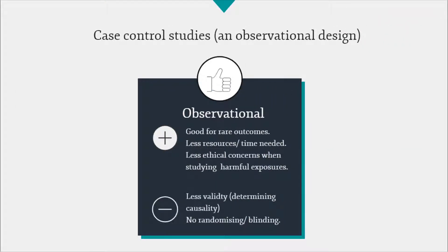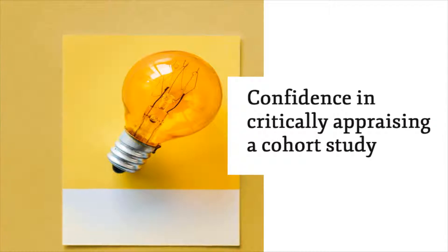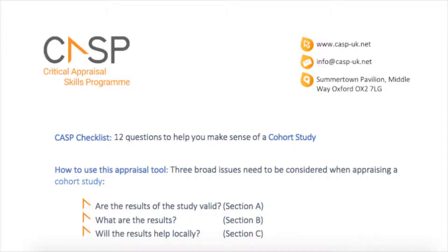Case control studies are a useful design for investigating the possible effects of rare exposures, and they are usually relatively quick and inexpensive to undertake. However, like all research studies in healthcare, their quality can vary, so it is important to critically appraise their quality. The CASP programme has produced a checklist for critically appraising case control studies, the link to which is located below this video. The CASP checklist separates the three key principles of critical appraisal — validity, trustworthiness of results, and value and relevance — into three sections: A, B and C respectively. Let's see how these can be addressed with an example.